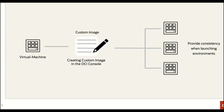Some use cases for custom images include creating a golden image to spin up in other environments, backing up the base OS image in case of hardware failure so you can quickly spin up a new VM and restore data from backup. You can also share your standards across multiple tenancies or regions using automation functions, custom image export/import, and Object Storage to copy images where required.